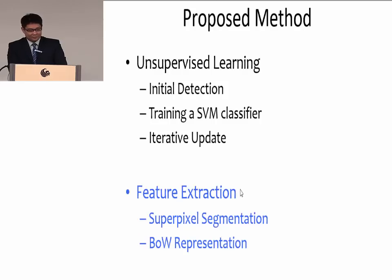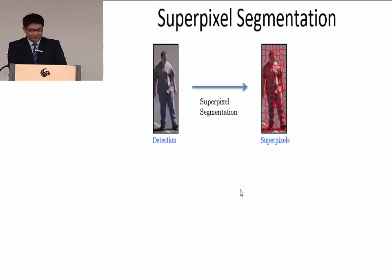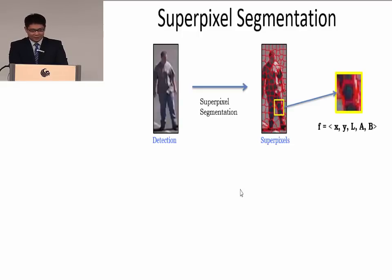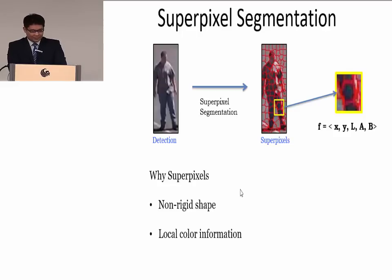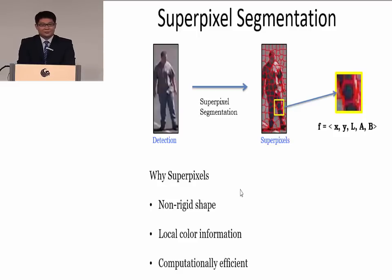To train the SVM classifier, we also need good features. The HOG features are not reliable, so we propose superpixel features which contain color information. Given the detection window, we get superpixel segmentation. Each superpixel is represented by a five-dimensional feature vector F equals (X, Y, L, A, B), where X, Y is the average location and L, A, B are the average color features. We use superpixels because their non-rigid shape can represent non-rigid objects like humans, they preserve local color information, and they are computationally more efficient than using raw pixels.